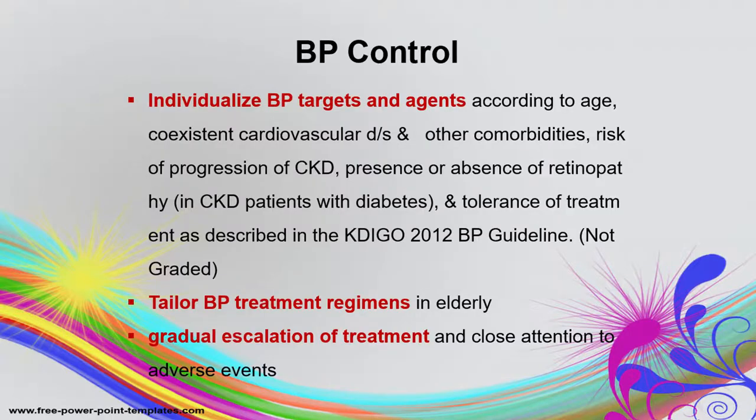The second point on delaying progression of CKD is blood pressure control. Blood pressure targets and agents are chosen according to the vision aids, co-existing cardiovascular disease and comorbidities, the rate of CKD progression, the presence or absence of proteinuria, and tolerance of treatment, as described in the 2004 BP guideline.